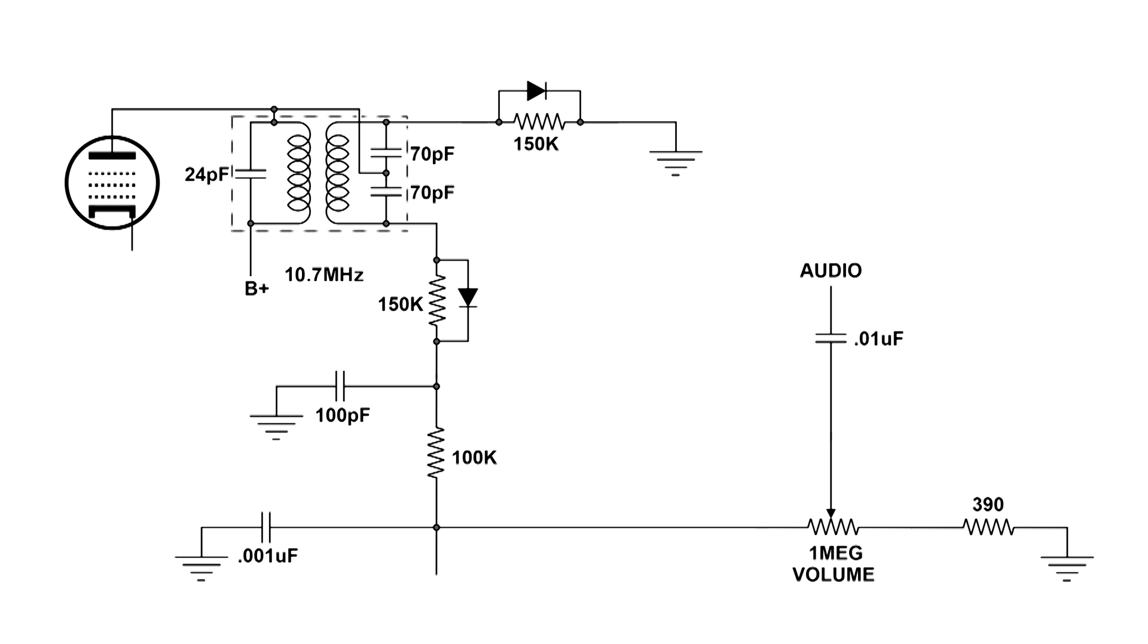Here's how we pick up both halves of the audio signal. When the top of the secondary is positive and the bottom is negative, the top diode conducts and here's the path for this part of the audio. It's from ground through the top diode through the coil down through the 150k ohm resistor, 100k ohm resistor over to the volume control. Now the second half is when the top of the secondary is negative and the bottom is positive.